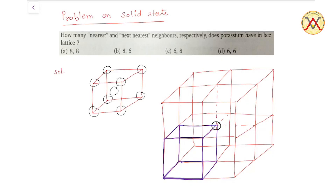Hello students, the question is: how many nearest and next nearest neighbors respectively does potassium have in a BCC lattice? BCC lattice में nearest और next nearest neighbor कितने होंगे। यहाँ पर मैंने BCC lattice का diagram बनाया है। BCC lattice में corner पर एक-एक atom रखे होते हैं और एक atom body center पर रखा होता है।